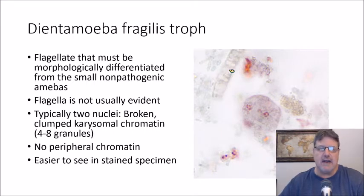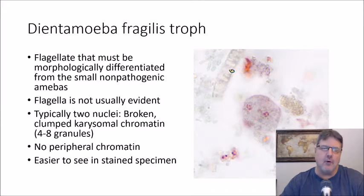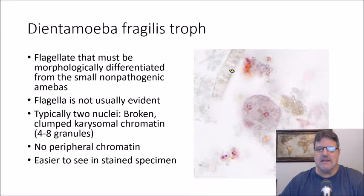This flagellate has to be differentiated from the non-pathogenic amoebas — you're not going to see a flagella, so it's going to look kind of like an amoeba. Being 'dientamoeba,' it characteristically has two nuclei with chromatin broken up into about four to six pieces and the karyosome. Sometimes you only see one nucleus, so that's also possible. It's a lot easier to see in a trichrome stain than in a wet prep.